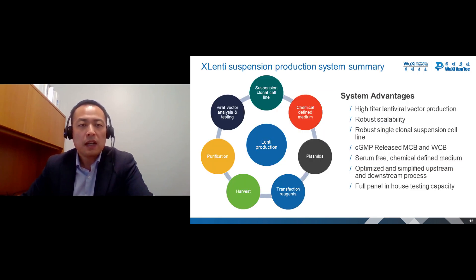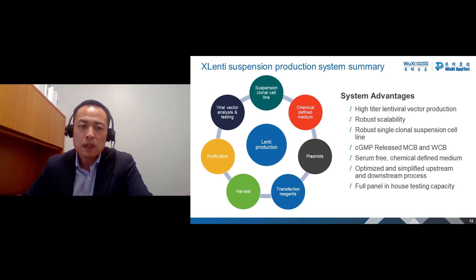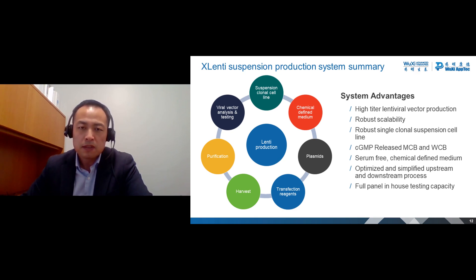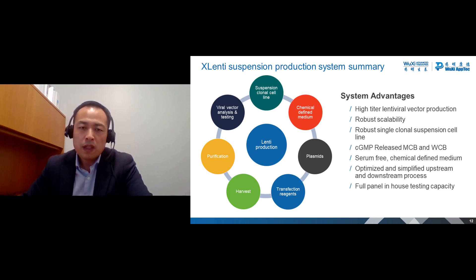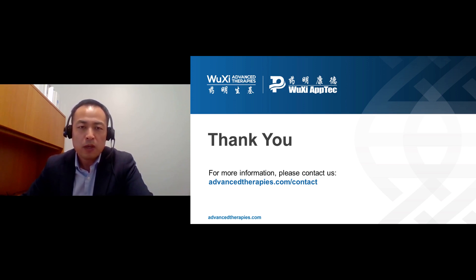In conclusion, today I introduced to you the Xlenti suspension production system. This system has obvious advantages for large-scale lentiviral vector manufacturing. Our system can produce high-titer lentiviral vector with a single-clonal cell line. It has robust scalability. MCB and WCB have been released for client projects. Chemically defined medium and HEK293 cells meet safety requirements. The optimized process is suitable for manufacturing production. Pre-prepared batch records, bills of materials, and technology transfer documentation will accelerate product delivery. Finally, fully integrated testing capacity will save time and cost for clients. Thank you for attending this webinar. I'm happy to take any questions.